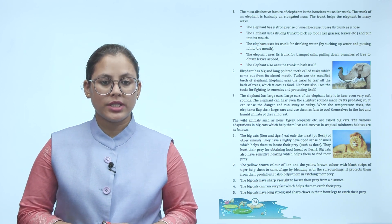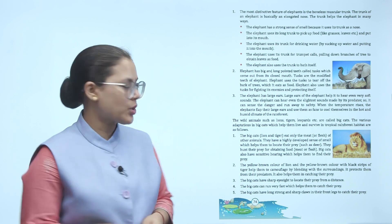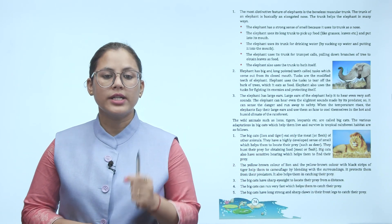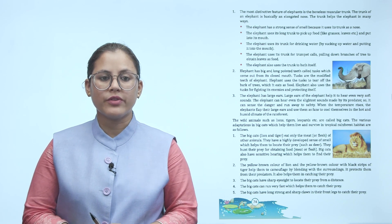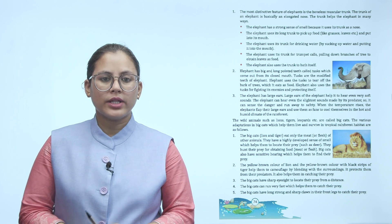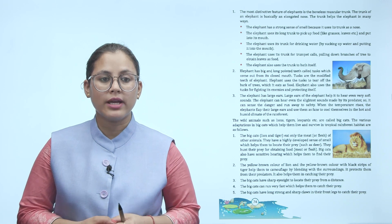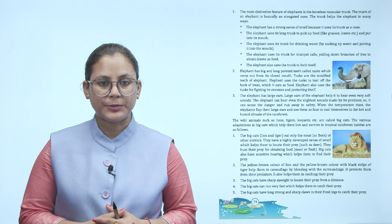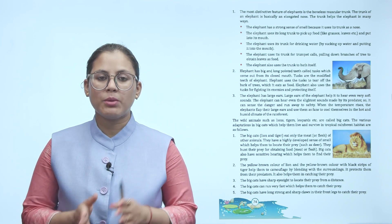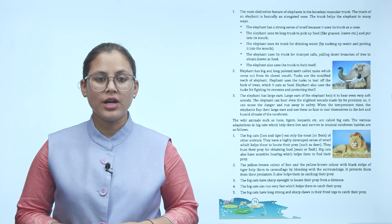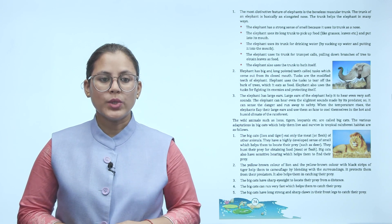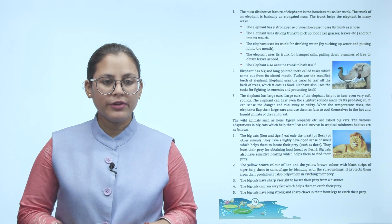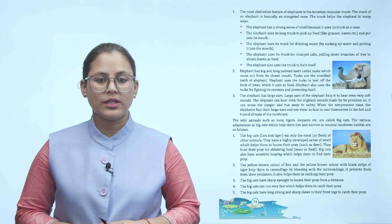The elephant has big, long pointed teeth called tusks which come out from its closed mouth. Tusks are modified teeth of the elephant. The elephant uses the tusks to tear off the bark of trees, which it eats as food, and also uses the tusks to fight its enemies and protect itself. The elephant has large ears that help it to hear even very soft sounds. When the temperature rises, elephants flap their large ears and use them as fans to cool themselves in the hot and humid climate of the rainforest.